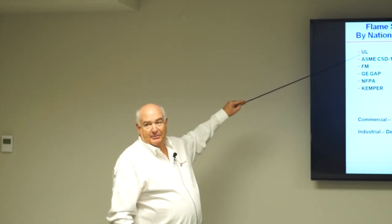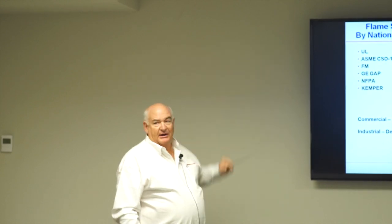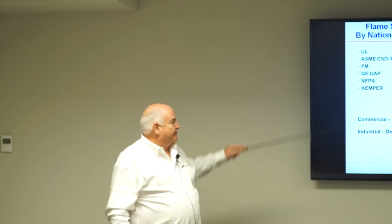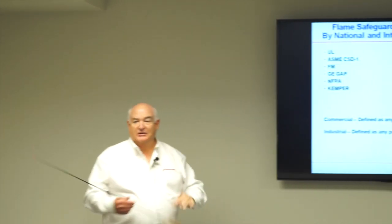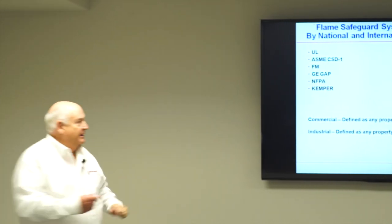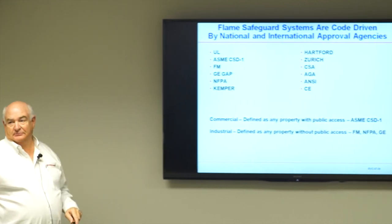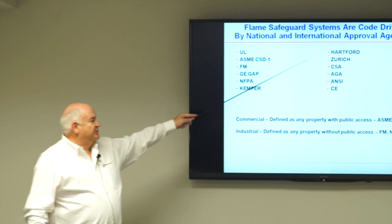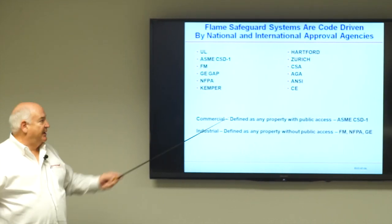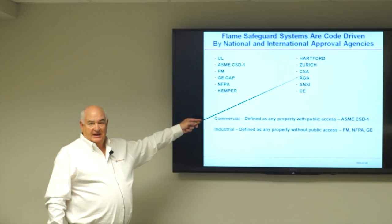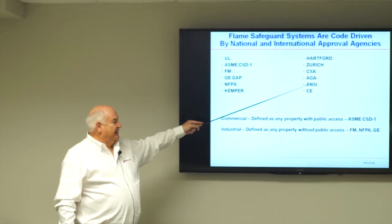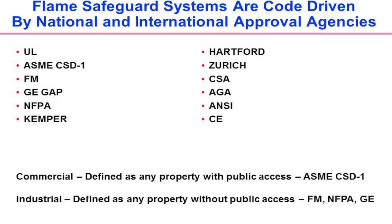These are the codes and standards involved: UL (Underwriters Laboratories), ASME CSD-1 — the code for commercial buildings — and FMG and NFPA for industrial. Kemper, Hartford, and Zurich are insurance companies that do inspections. CSA is Canadian standards. AGA is the American Gas Association, ANSI is American National Standards, and CE is Europe, which has its own codes by country.